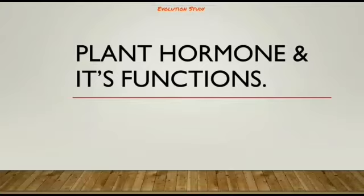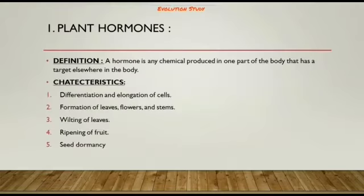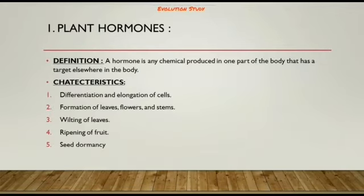Plant hormones and their functions. By definition, a hormone is any chemical produced in one part of the body that has a target elsewhere in the body. Characteristics can be differentiation and the elongation of cells, formation of leaves, flowers, and stems.